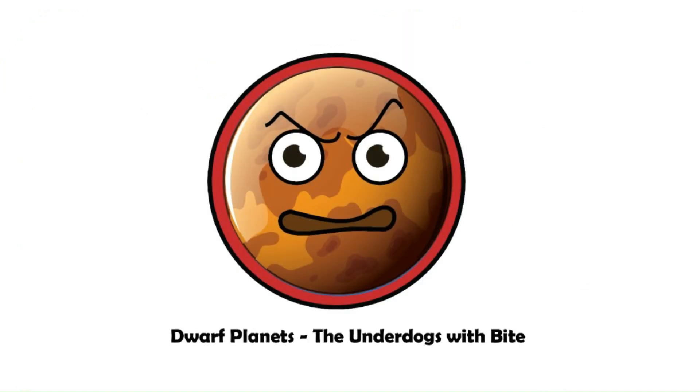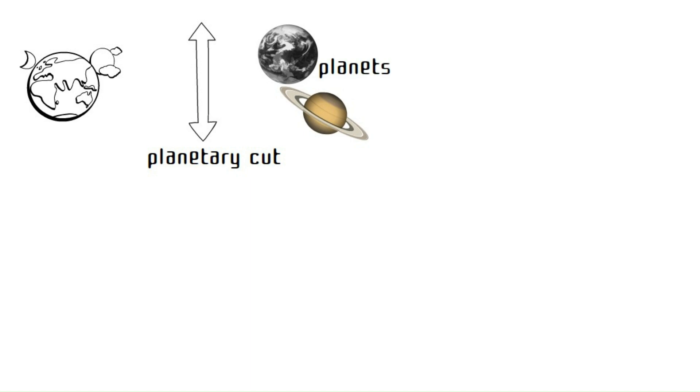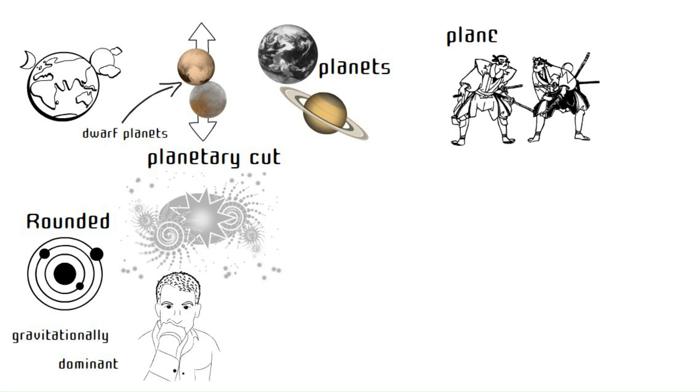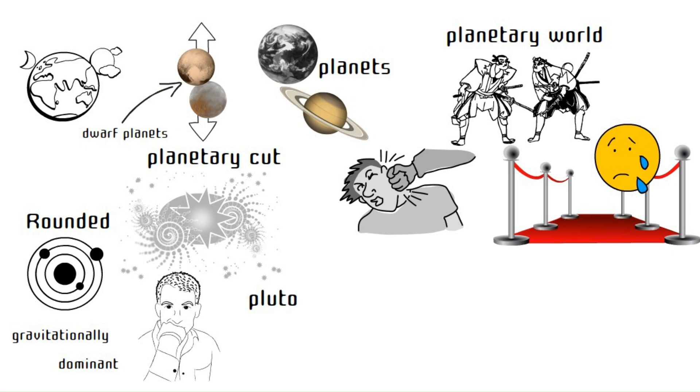Dwarf Planets, the Underdogs with Bite. Not all celestial A-listers make the planetary cut. Enter the dwarf planets like Pluto and Eris. These feisty underdogs, rounded and gravitationally dominant, haven't quite cleared their cosmic neighborhood. Think of them as the plucky contenders in the planetary world, packing a punch but missing the Premier League.